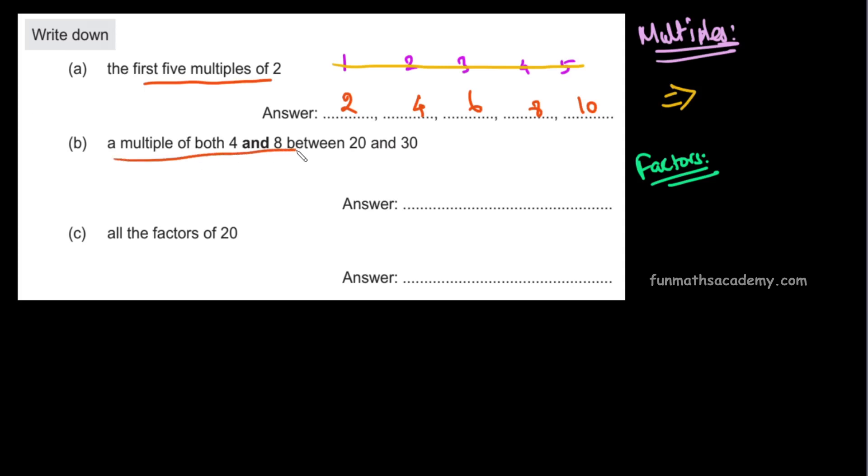Multiple of both 4 and 8 between 20 and 30. So multiples of 4 are: 4, 8, 12, 16, 20, 24, 28, 32. This goes up to 30, so we stop.